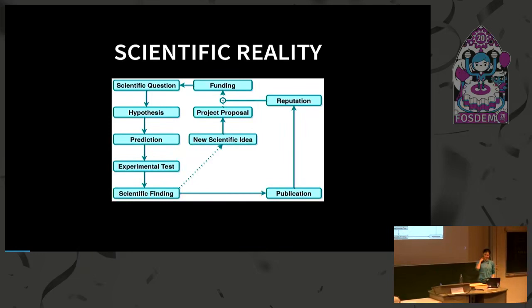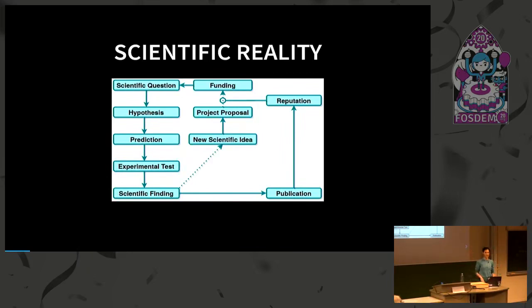As you can see, I'm not mentioning software here yet. Of course, software is an important part, especially in the experimental part of this loop, but it's not a key part. It doesn't really play a big role in publications or reputation — at least not yet.